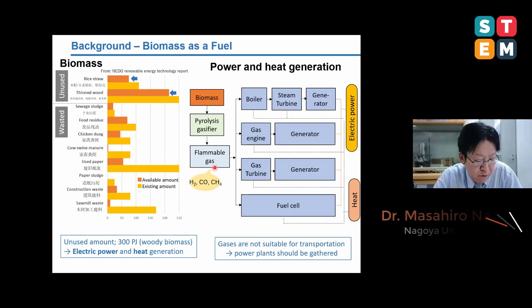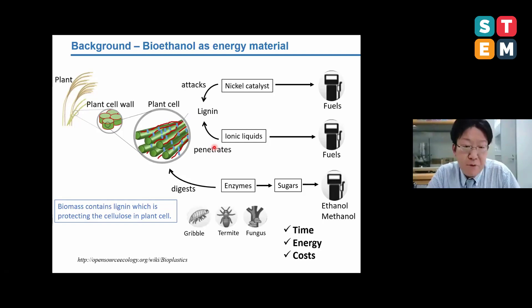A part of these biomass is used for electric power and heat generation. In all techniques, biomass is transformed to flammable gases through pyrolysis gasification. Because these gases are not suitable for transportation, these power plants should be constructed near the place where biomass is produced. The other form of biomass is known as bioethanol. This picture explains the bioethanol production from woody biomass. Through multiple steps, the biomass is transformed to ethanol. Therefore, this technique requires time, energy, and cost to get ethanol.